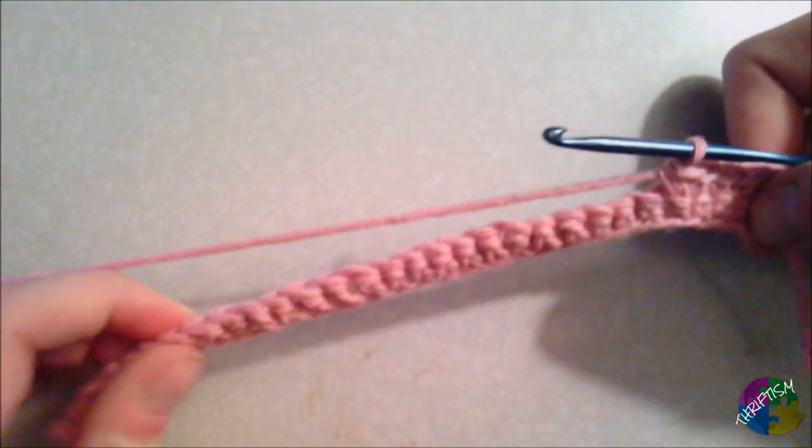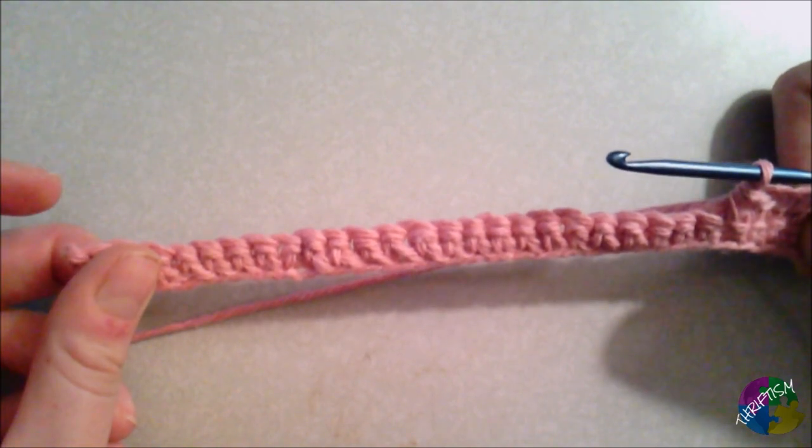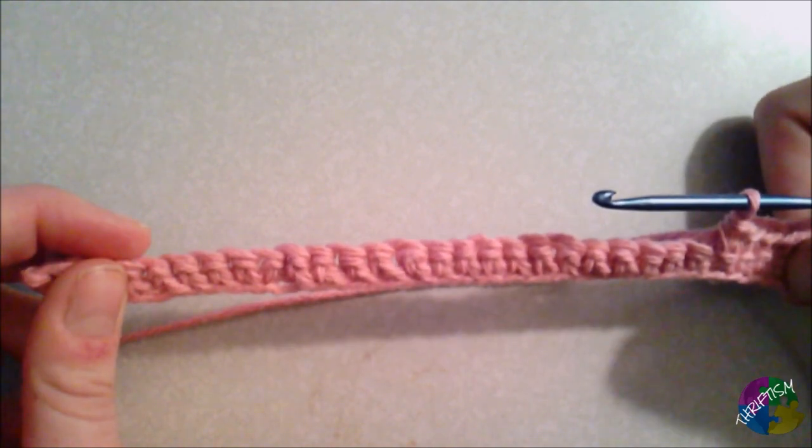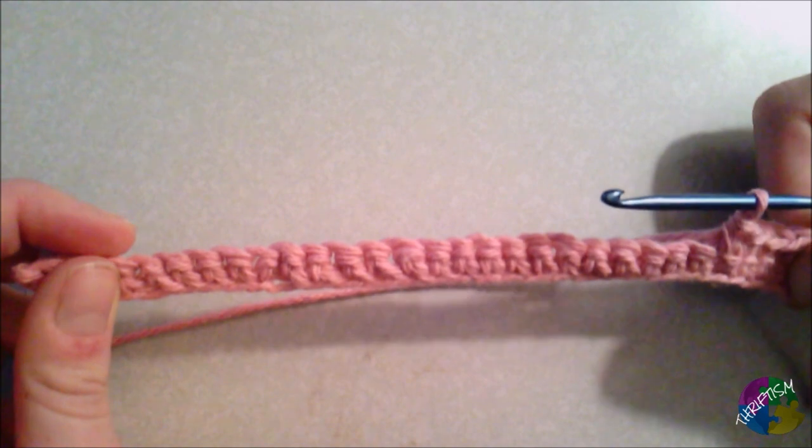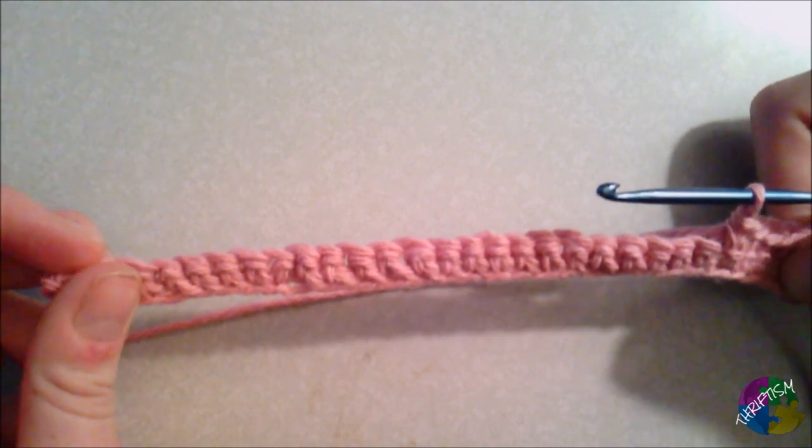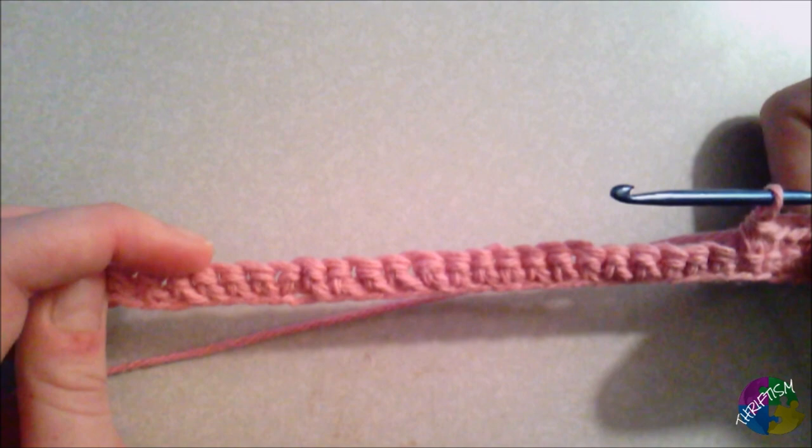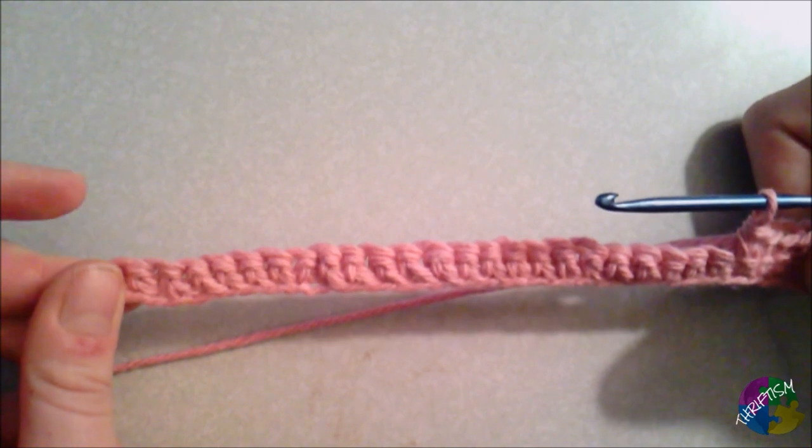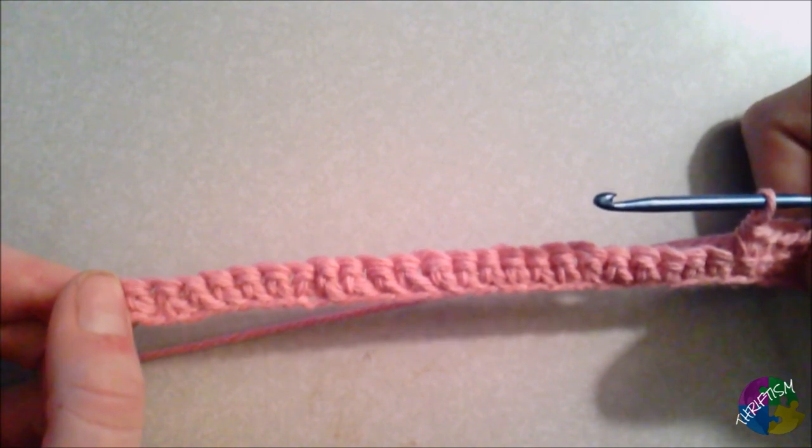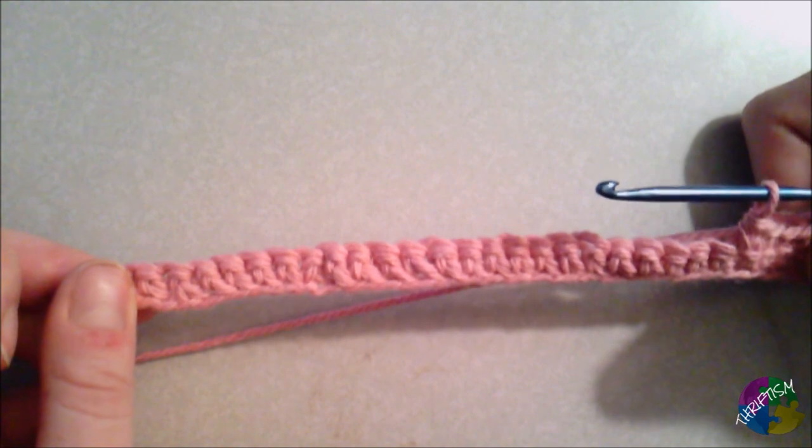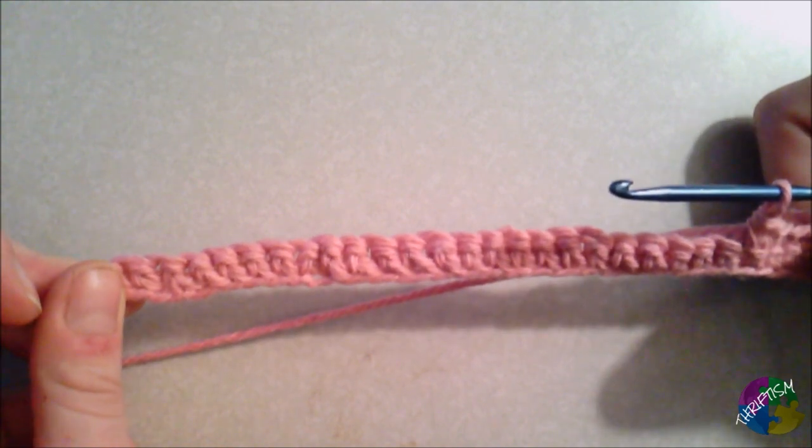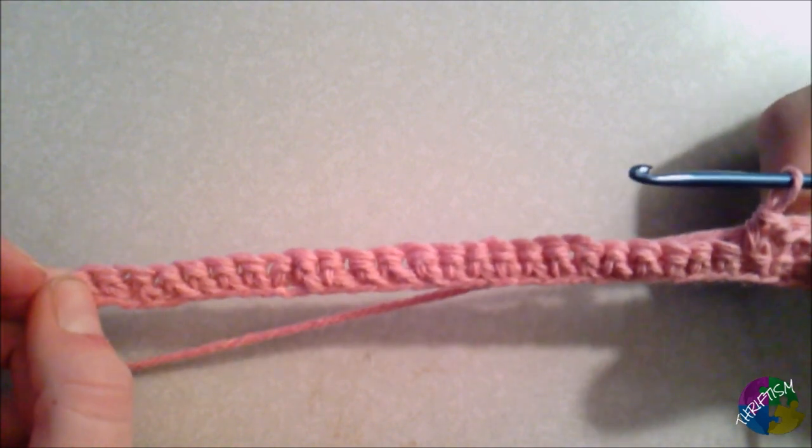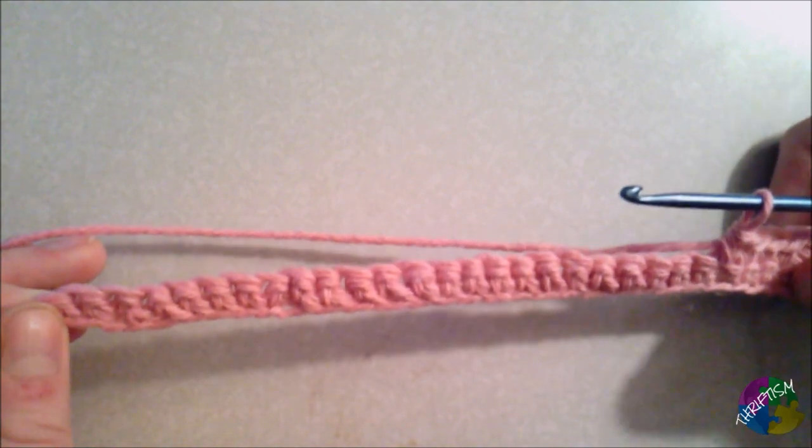So after you get to the end of this row, you'll chain one again, turn your work, and single crochet 30 across. You'll repeat this to make 29 more rows. So we'll want a total of 30 by 30. So we did one. This is on our second one here. So continue until you have 30 rows. And we'll check back in when we weave in the ends to finish off. If you would like a step-by-step for this, head over to the blog, where we will have a quick printout pattern with steps for you. We'll also have some information in the video description.